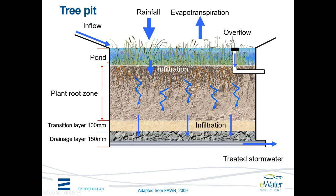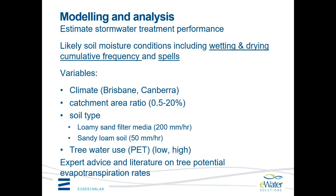The interesting parts are the modelling and analysis. We did two things: estimation of stormwater treatment performance, which is what we usually use MUSIC for, and looking at likely soil moisture conditions — wetting and drying cumulative frequency patterns, and spells of drying — to understand how often and how long these trees are drying out. We looked at Brisbane and Canberra climates, and have also done work in the west of Melbourne since then.